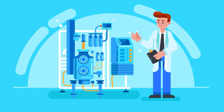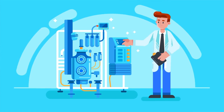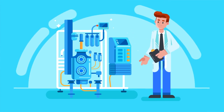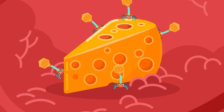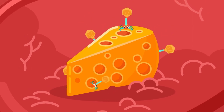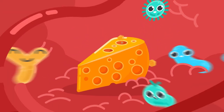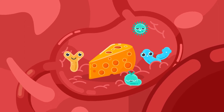Phages are cultivated in several hundred litre volumes and purified for further use. Phages can, for example, be added to food to kill bacteria that cause food poisoning, without affecting the good bacteria in our gut.